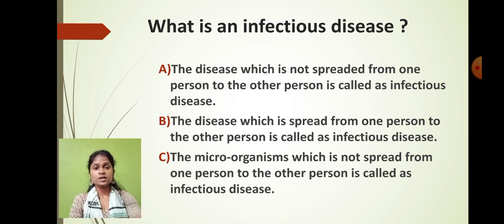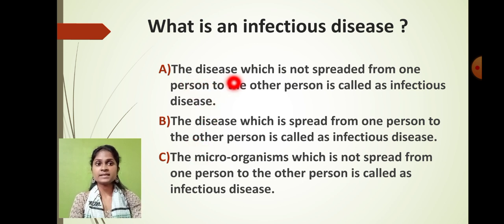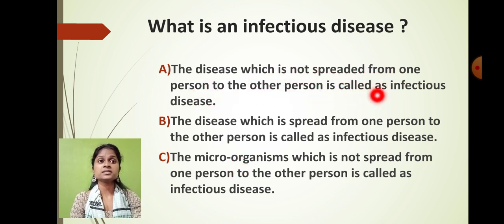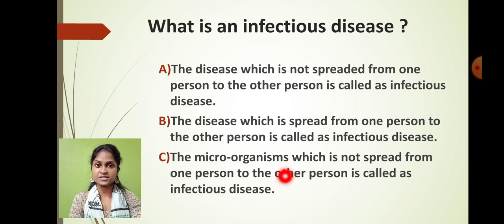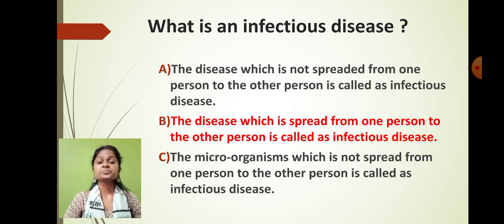For 'answer in one sentence' questions, you also won't have to type — three options will be provided. For example, 'What is an infectious disease?' Option A says the disease is not spread from person to person; Option B says it is spread from one person to another; Option C says the microorganism is not spread from person to person. Option B is the correct answer. I hope the paper pattern is clear. Wishing you all the very best for your semester examination. Bye bye, take care.